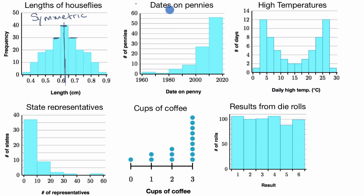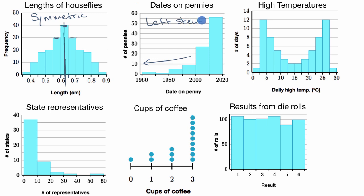Here we have a distribution of the dates on pennies. Someone observed a bunch of pennies and found that a little more than 55 had a date between 2010 and 2020, while very few had a date older than 1980. When you have a tail to the left — a long tail to the left — this is known as a left skewed distribution. You can recognize it because the high points of your distribution are on the right, but you have this long tail that skews it to the left.